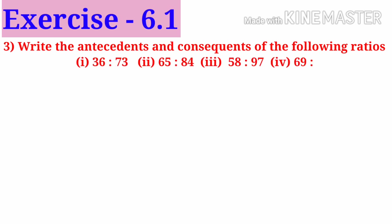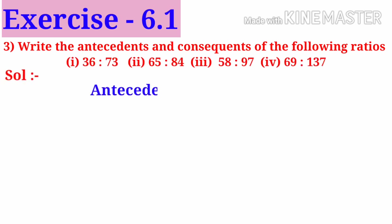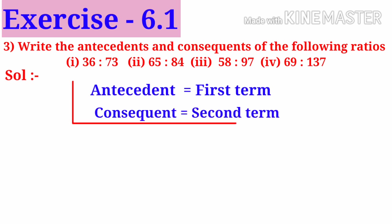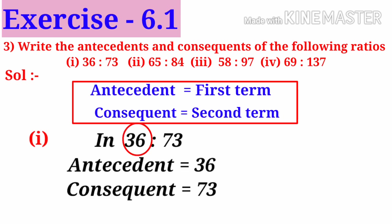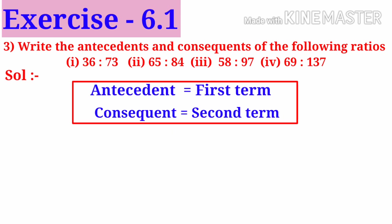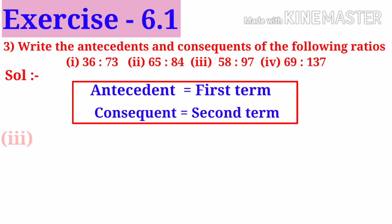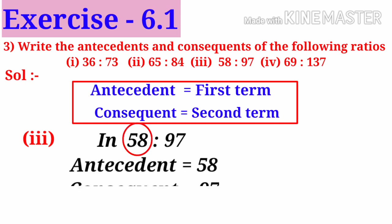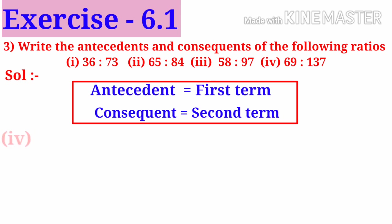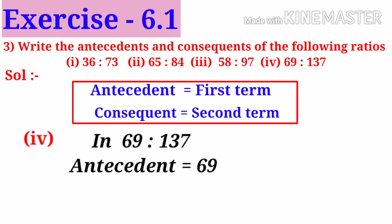Write the antecedents and consequents of the following ratios. Solution: Antecedent means first term of the ratio. Consequent means second term of the ratio. Number 1, in 36 is to 73, antecedent is 36, consequent is 73. Number 2, in 65 is to 84, antecedent is 65, consequent is 84. Number 3, in 58 is to 97, antecedent is 58, consequent is 97. Number 4, in 69 is to 137, antecedent is 69, consequent is 137.